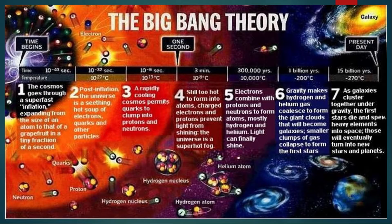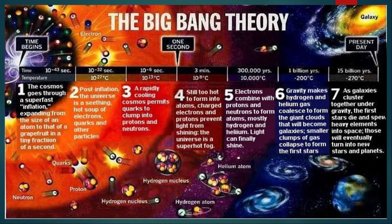Then, 300,000 years later, the universe had cooled enough so that electrons combined with protons and neutrons to form atoms — mostly hydrogen and helium. So light could finally shine. After 300,000 years, hydrogen and helium were formed.